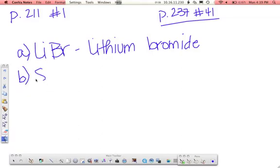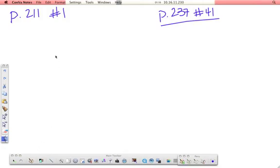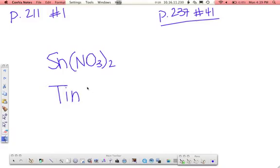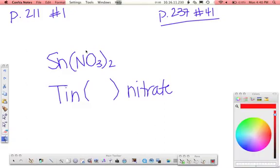B is Sn(NO3)2. Sn stands for tin. That is one of the elements that needs a Roman numeral. NO3 is a polyatomic ion, and if you go to your list, you see that NO3 is nitrate. So to figure out what Roman numeral tin is going to have, you have to look at your nitrate. And your nitrate, according to that list that I gave you, nitrate has a charge of negative 1.